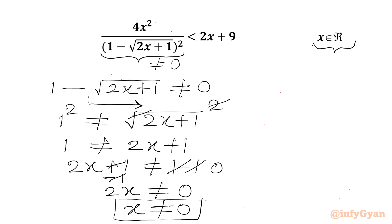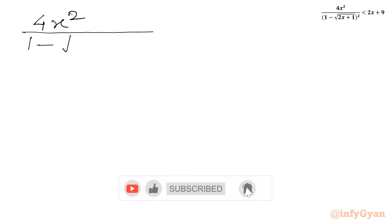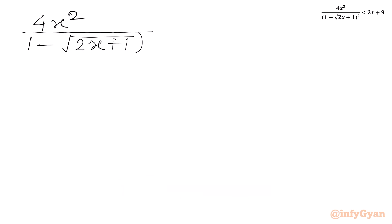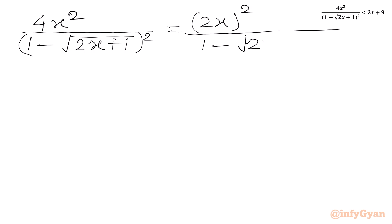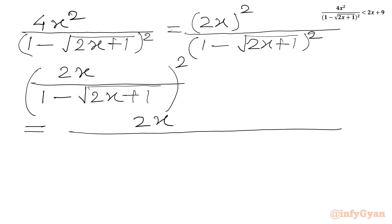Now we will simplify our LHS expression. We have 4x² over (1 − √(2x+1))². Since 4 = 2², we can write the numerator as (2x)², and the denominator as (1 − √(2x+1))². So this becomes [2x over (1 − √(2x+1))] whole square.